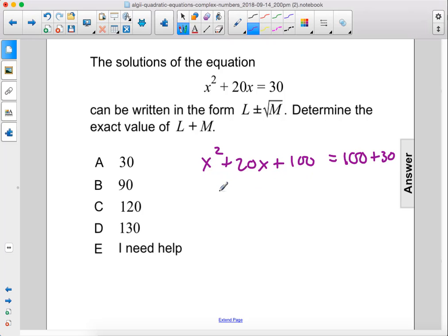That gives us the perfect square x plus 10 squared equals 130. Take the square root of both sides.